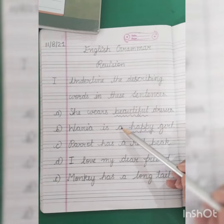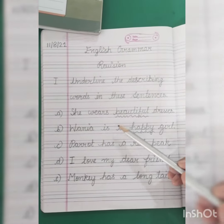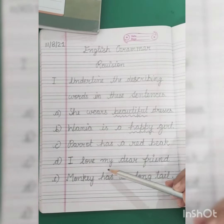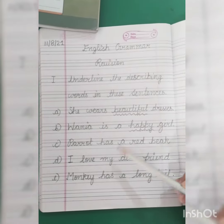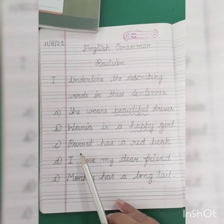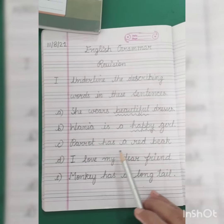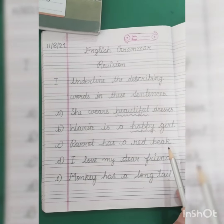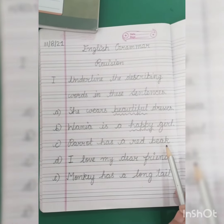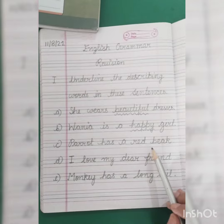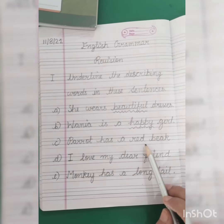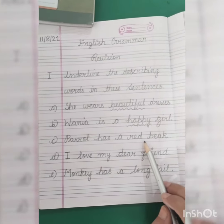Ye do parts mein ne aapke liye kar diye hain. The rest three parts you are going to do yourself — this is your homework. Kya diya hua in mein? I'll read it for you. Parrot has a red beak. Parrot ki tote ki chonch hai jo beak hai, woh red color ki hai. Ab aapko pahchanna hai ki what is the describing word here.